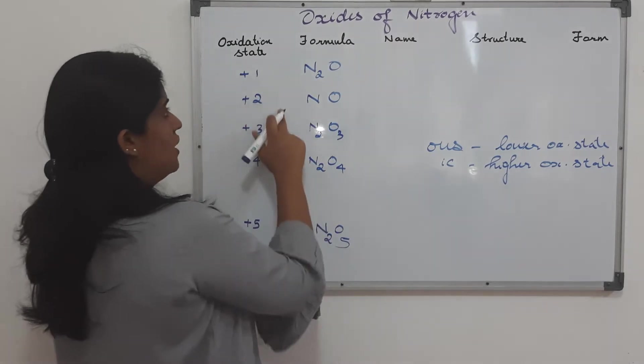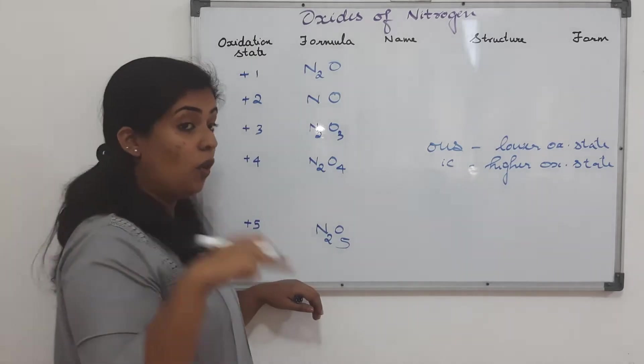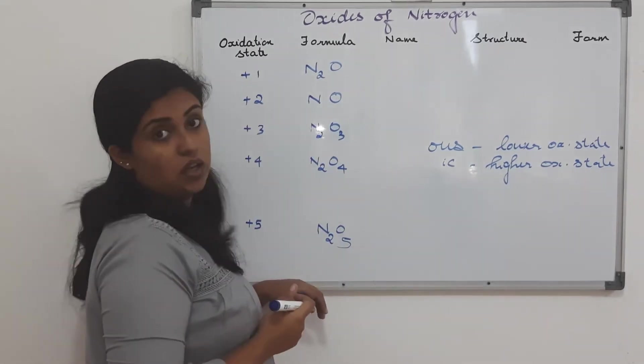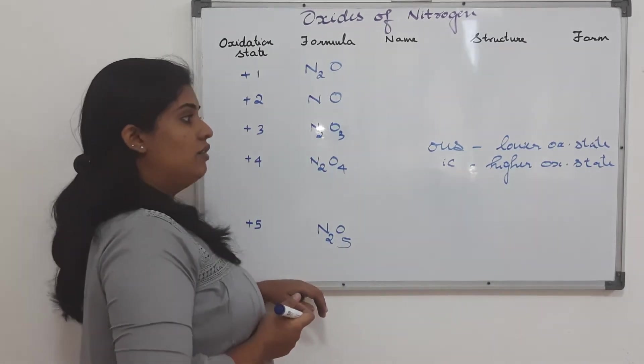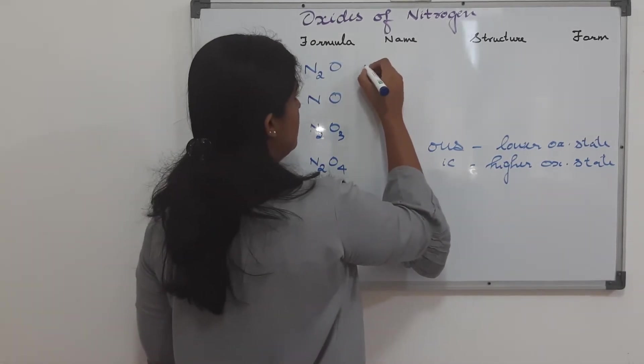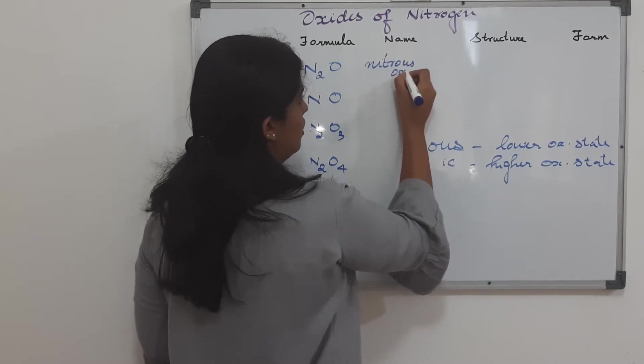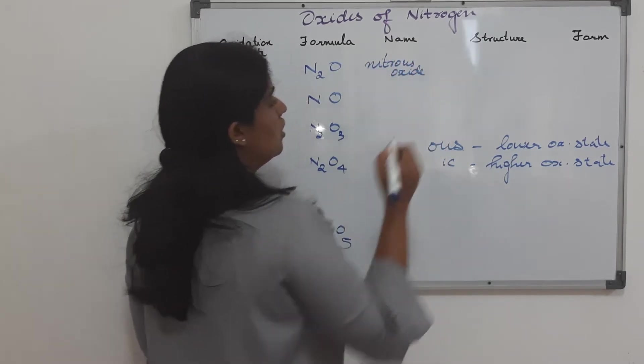Out of these two, if you consider the first and the second one, we can see that this one has a lower oxidation state. The first one has a lower oxidation state. Therefore, it is nitrous oxide.